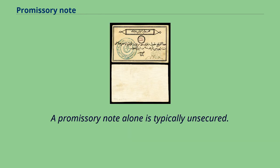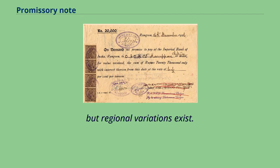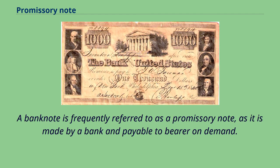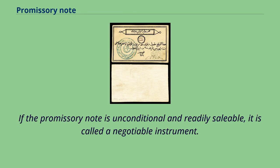A promissory note alone is typically unsecured. The term note payable is commonly used in accounting, or commonly just as a note. It is internationally defined by the convention providing a uniform law for bills of exchange and promissory notes, but regional variations exist. A bank note is frequently referred to as a promissory note, as it is made by a bank and payable to bearer on demand. Mortgage notes are another prominent example. If the promissory note is unconditional and readily saleable, it is called a negotiable instrument.